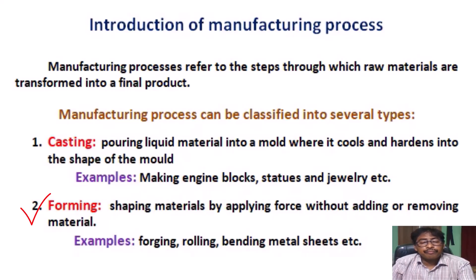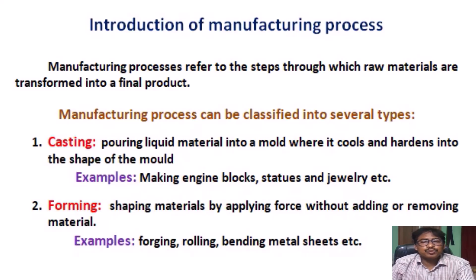Two: Forming — shaping materials by applying force without adding or removing material. In this process, we apply stresses that can be in the form of tension, compression, shear, etc., to deform the raw material. Examples: forging, rolling, bending metal sheets, extrusion, wire drawing, etc.